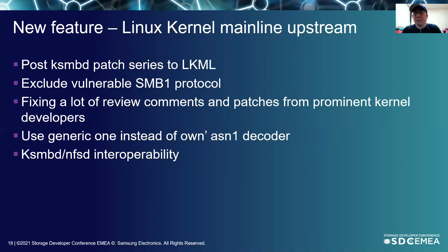We have sent KSMD patch version 3 to LKML. We exclude vulnerable SMB version 1 code from the KSMD mainline version, and we are getting a lot of review comments and patches from high-profile kernel developers. If there is a big change from review, we replace our own SMB1 decoder with the existing Linux kernel implementation. We have added the KSMD-NFSD inter-op to-do in the document as requested by Amir. He listed up features for KSMD-NFSD inter-op and said KSMD is in a position to do a better job. We have only had two iterations out of the list, and we are waiting for more review. We are expecting to merge it into the Linux 5.14 merge window after getting review for another two months.